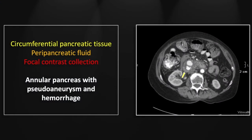There is a circumferential rim of pancreatic parenchyma encircling the second portion of the duodenum and causing luminal narrowing and partial obstruction. There is extensive, slightly hyperdense fluid surrounding the proximal duodenum consistent with hemorrhage, and there is a well-circumscribed enhancing contrast collection consistent with the pseudoaneurysm, almost certainly arising from a branch of the gastroduodenal artery.